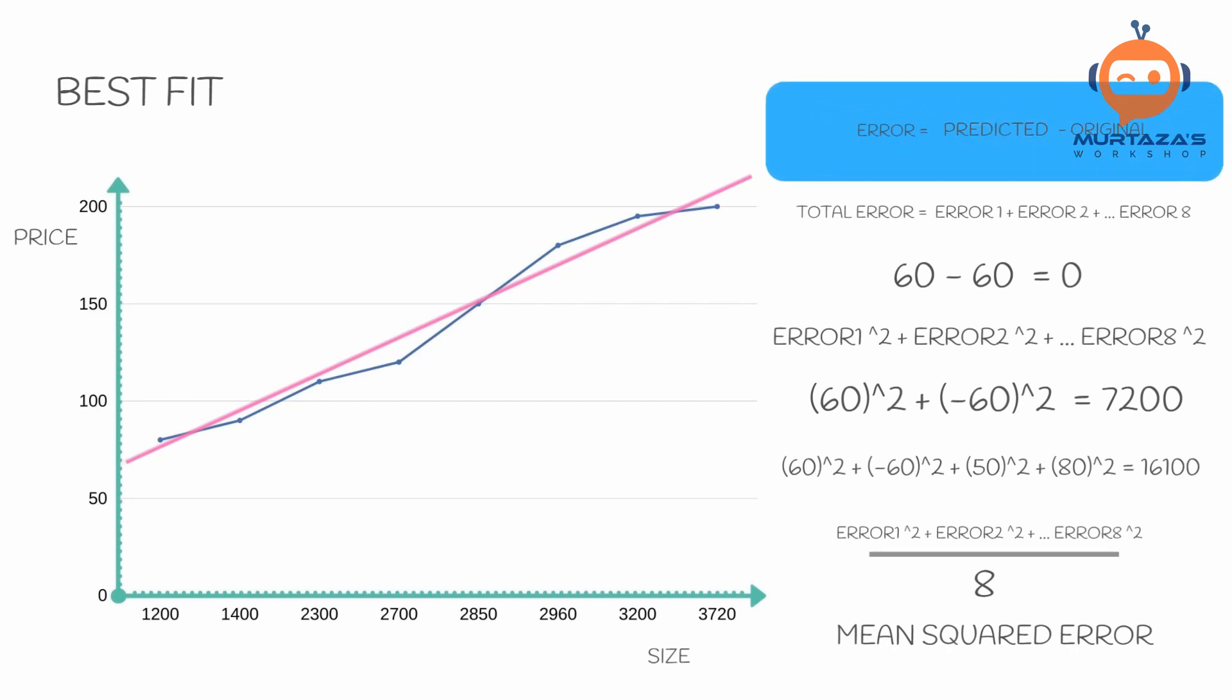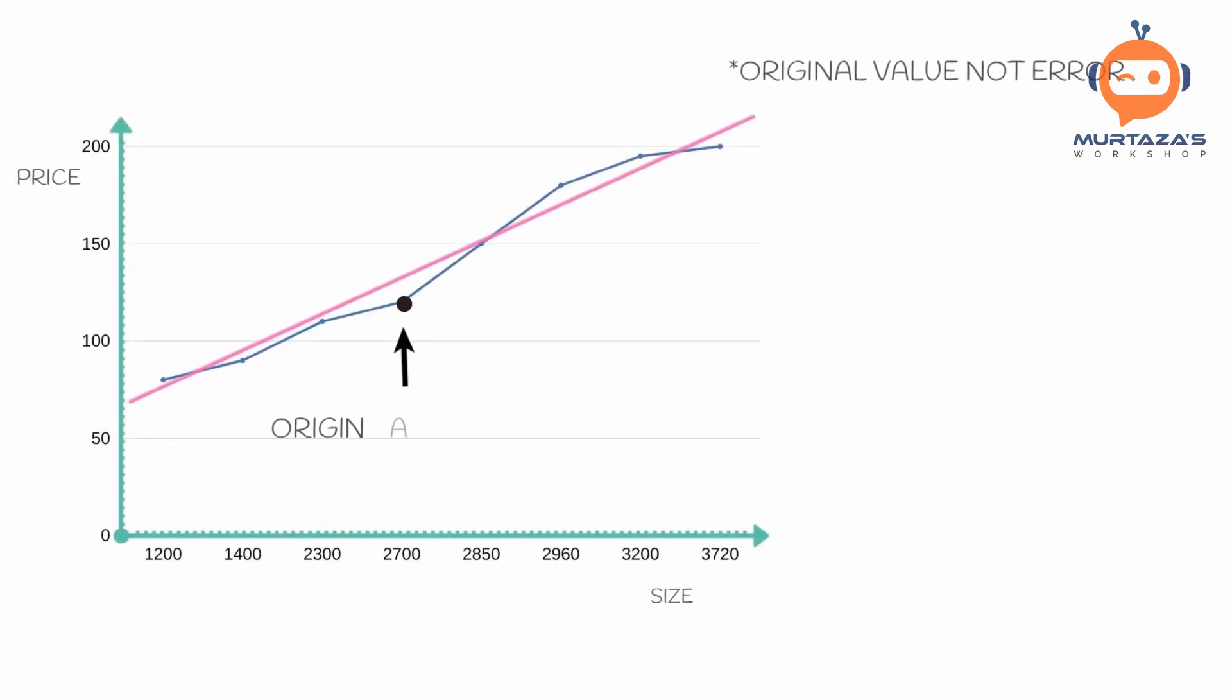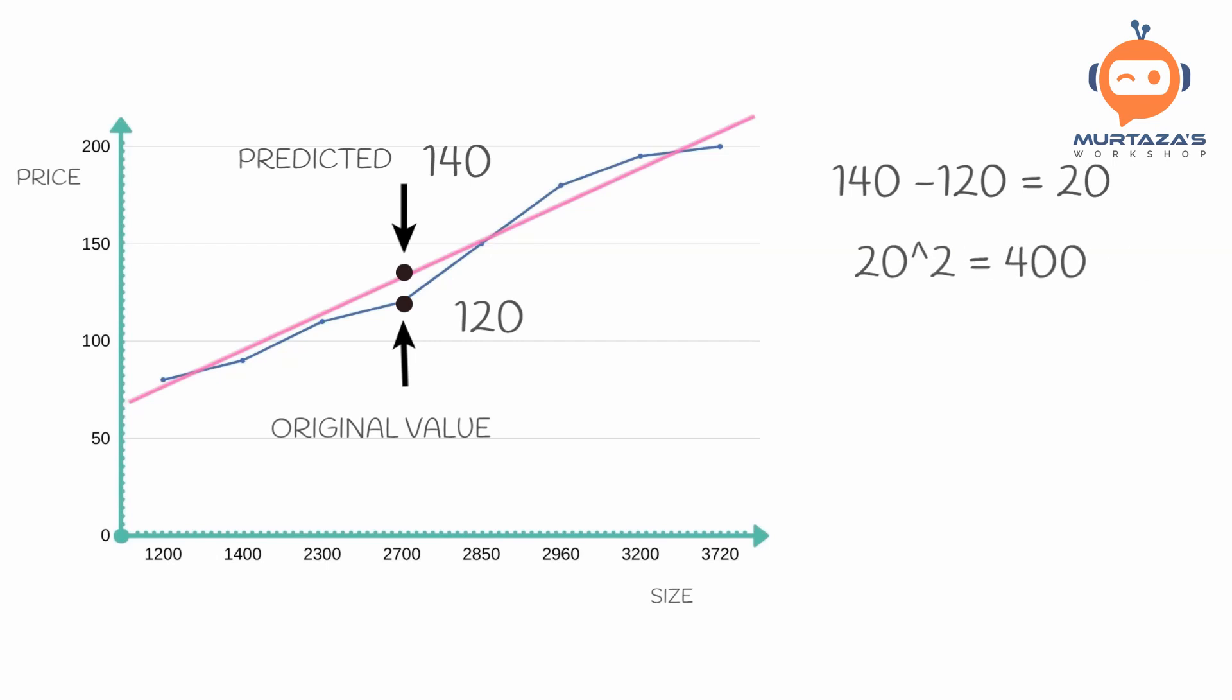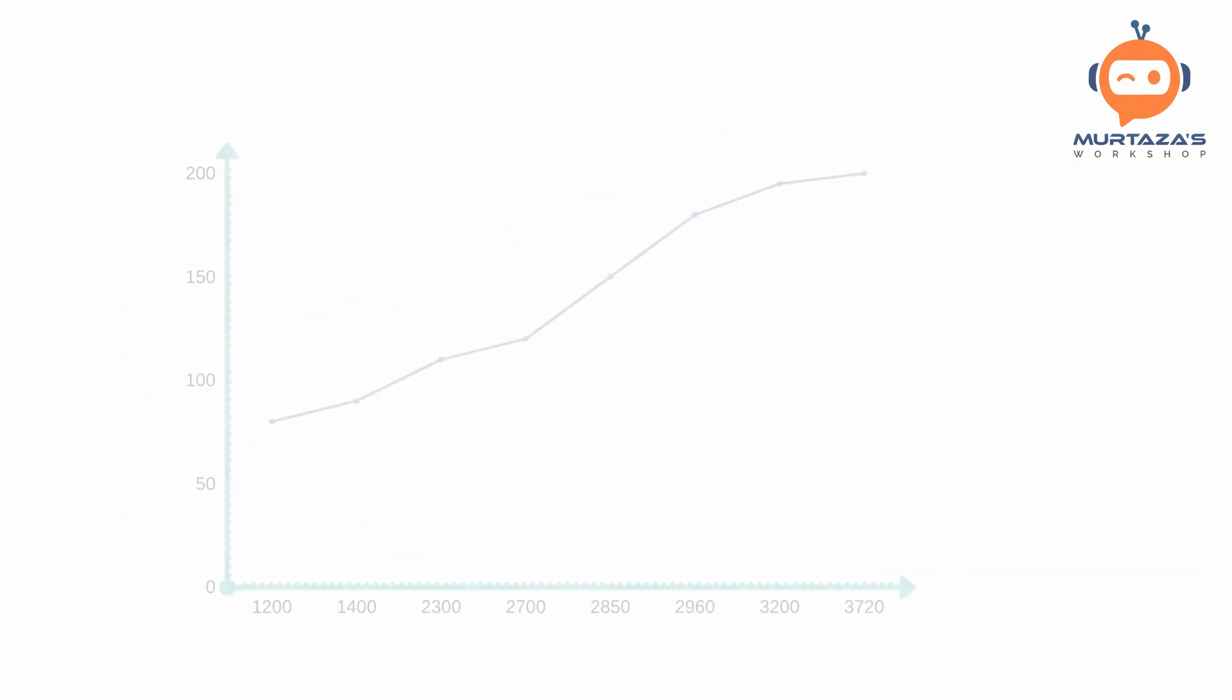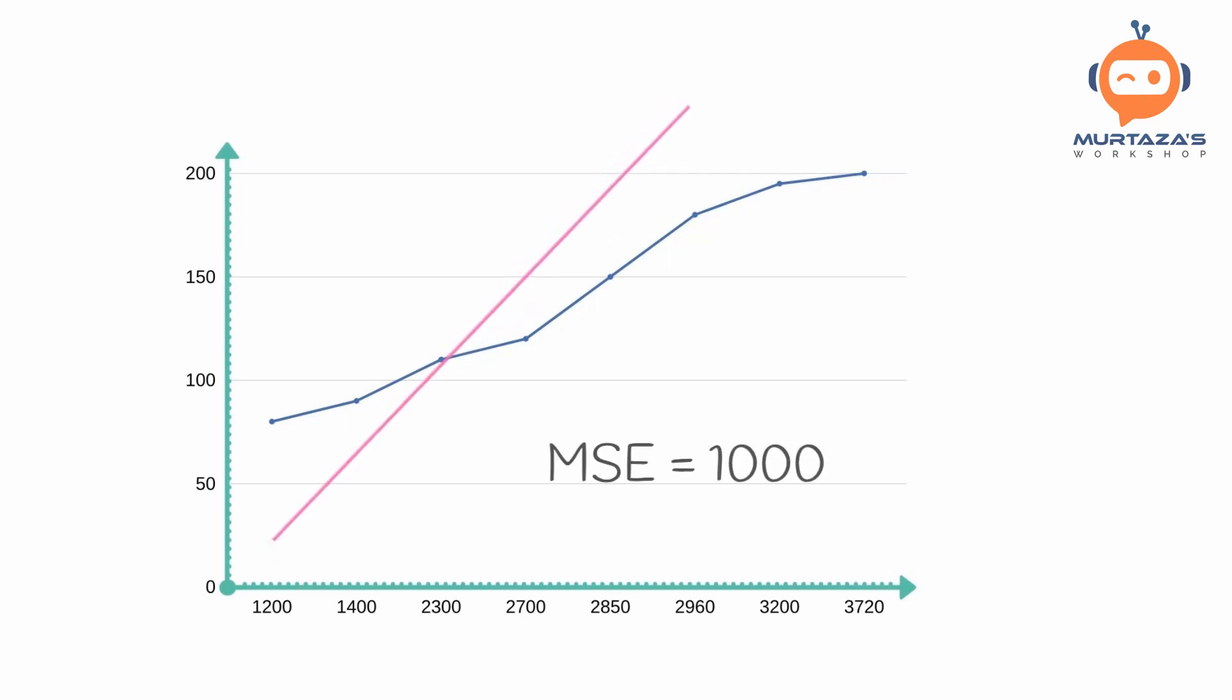So this feedback method is basically mean squared error. Here we find the difference between the prediction and the actual value and then we square it. After that we add all of them up and take their mean. So this will end up with a single value that will tell us how good our fit is. So let's see this in action. For example the original error here was 120 but the prediction here is 140. So the error will be 140 minus 120 that will equal to 20. Now we will square this so 20 squared is equal to 400.